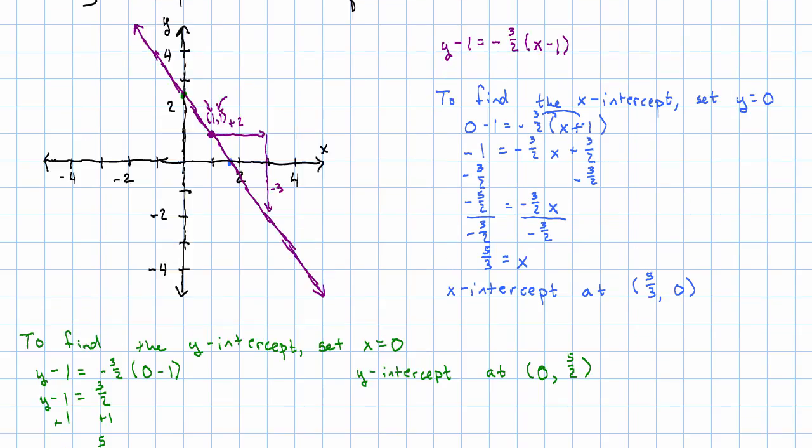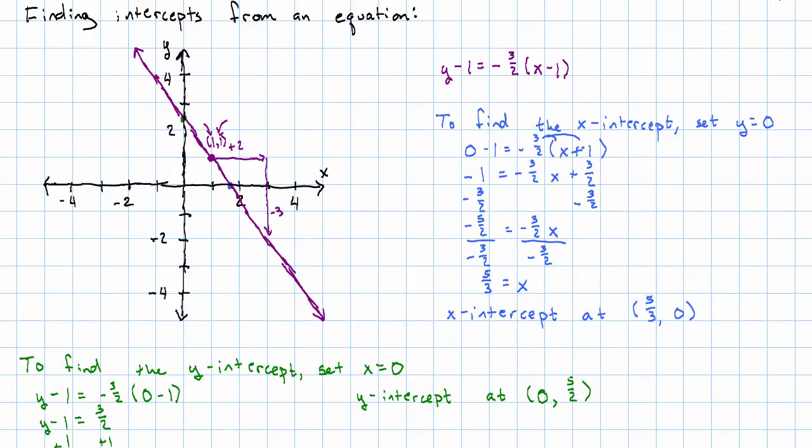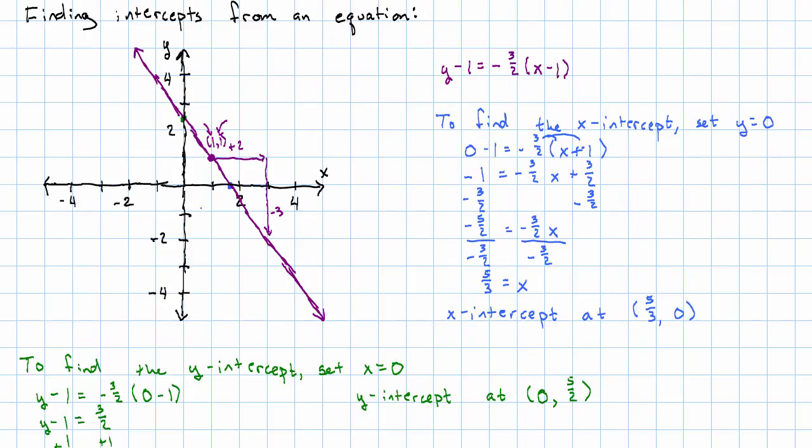Both of those seem like plausible coordinates for those points, right? If I mark thirds on the x-axis and I count out 1, 2, 3, 4, 5 thirds, that seems like it's about that point where I intersect the x-axis.